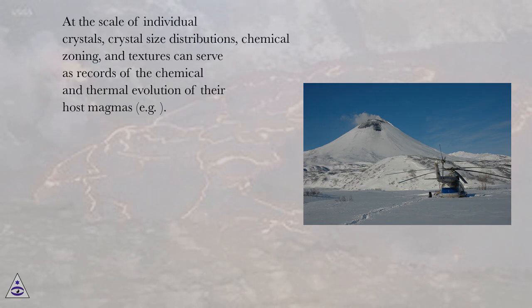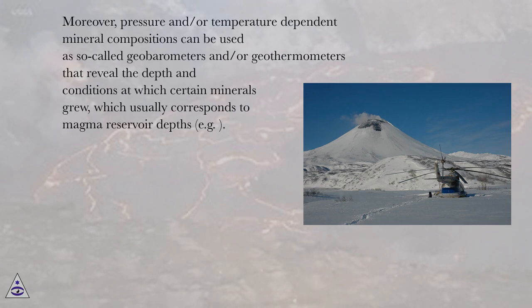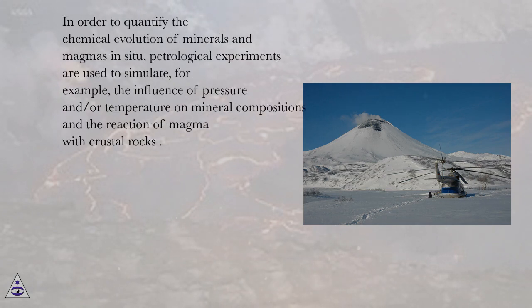At the scale of individual crystals, crystal size distributions, chemical zoning, and textures can serve as records of the chemical and thermal evolution of their host magmas. Crystal growth rates and chemical diffusion across crystal zones can furthermore be used to quantify the timescales of magma storage or replenishment. Moreover, pressure- and/or temperature-dependent mineral compositions can be used as geobarometers and/or geothermometers that reveal the depth and conditions at which certain minerals grew, which usually corresponds to magma reservoir depth. Petrological experiments are used to simulate the influence of pressure and/or temperature on mineral compositions and the reaction of magma with crustal rocks.